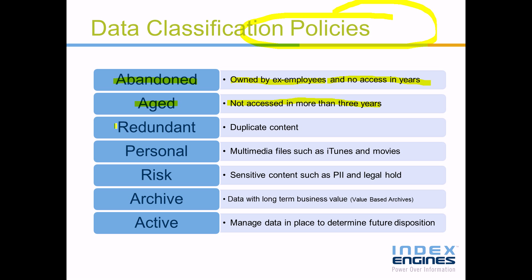Data profiling can also find redundant data — duplicate content. In the data profiling engine, as data is processed, an MD5 hash algorithm is used to create a document signature that will determine if the data is duplicate or not.